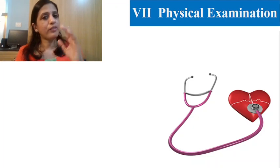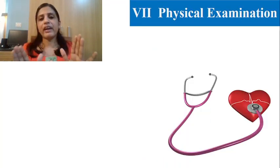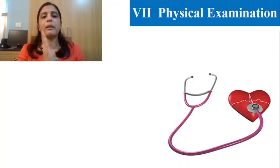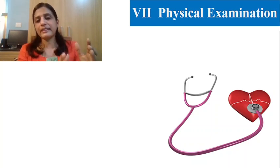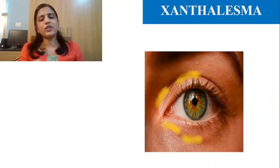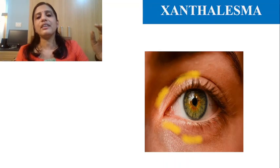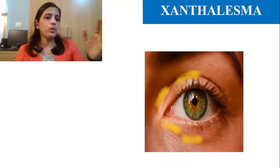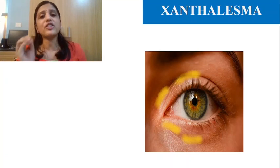Physical examination is divided into three parts: neck examination, precordium examination, and peripheral vascular examination. In this video, only the neck examination will be covered. Before the neck examination, note xanthelasma — yellowish, slightly thickened deposits seen on the upper and lower eyelids, especially the upper eyelid — which indicates high cholesterol and elevated triglycerides. You can type 'xanthelasma' in Google to see a real picture.